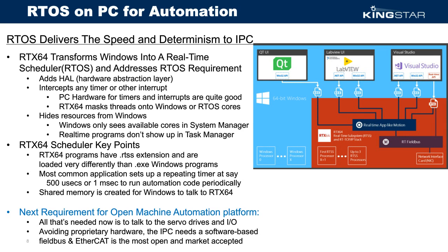We're building both a Windows side and an RTX side. When they need to talk to each other — and they always do — you allocate a chunk of shared memory defined as a data structure via an include file. You can define bools, ints, doubles, and even a diagnostic array up to two gigabytes if needed. You can store servo data and get it up to the Windows side via shared memory.